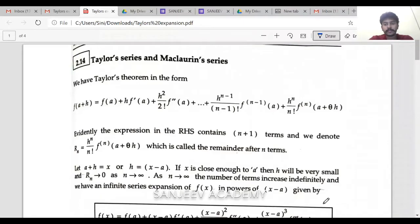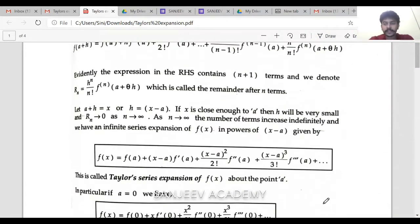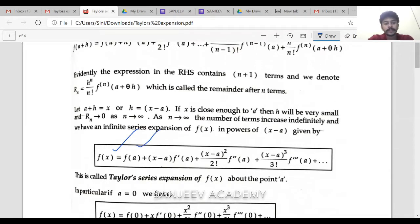Let's see this formula. For this particular thing, we have to know the formula. f of x is equal to f of a plus x minus a into f dash of a, plus x minus a the whole square by 2 factorial into f double dash of a, plus x minus a the whole cube by 3 factorial and f triple dash of a and so on.